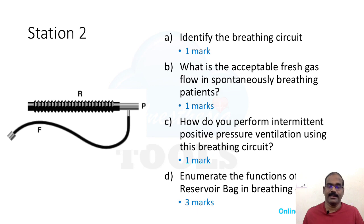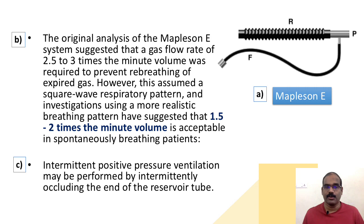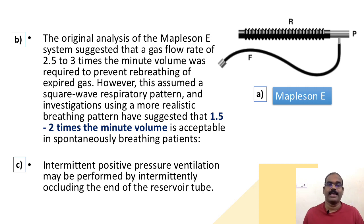Moving to station 2 — these are simple questions: identify the breathing circuit. The answer is Mapleson E. For part B, the minute volume requirement for spontaneous ventilation: the original analysis of the Mapleson E system suggested a gas flow rate of two and a half to three times the minute ventilation was required to prevent rebreathing. However, investigations using a more realistic breathing pattern suggest one and a half to two times the minute volume is acceptable in spontaneously breathing patients.